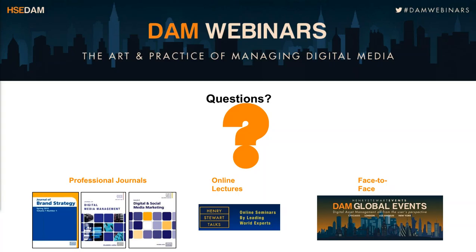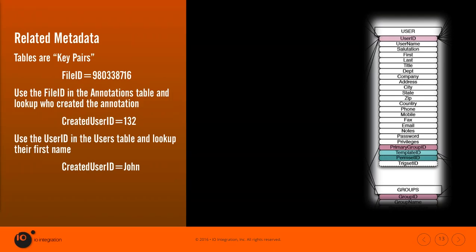Bill, I'm glad this question came up because it was something I meant to cover. In a traditional relational database, if you need to change a table or change the taxonomy two years after you've implemented DAM, it's doable, but there's time and effort involved. Is that correct, Bill? Yes, that's correct — it is quite extensive to go back in and restructure and re-index those tables within a relational database. But we don't have that limitation within a graph database.